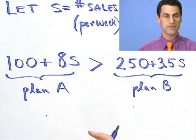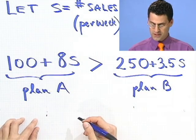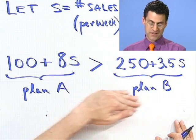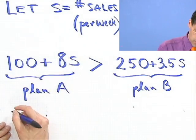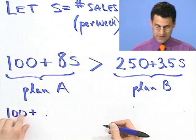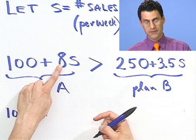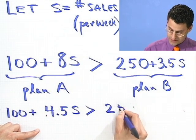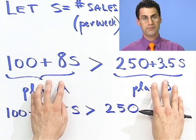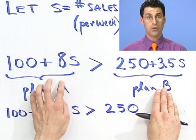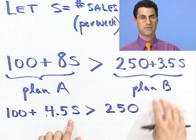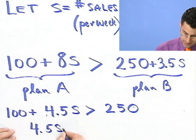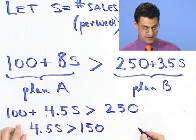Now we can get down and solve this using math. I'll try to get all the S variables on one side and all the constants on the other. If I bring the 3.5S over to the other side by subtracting it — the sign won't change — I would see 100 plus 4.5S is greater than 250. I just subtracted 3.5S from both sides: on the right they cancel, and on the left 8S minus 3.5S gives me 4.5S. Now I'll subtract 100 from both sides and see 4.5S is greater than 150.